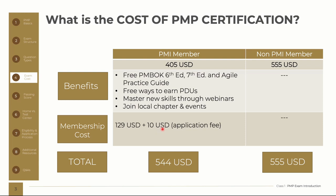The cost of PMI membership for one year is 129 USD, and there is a 10-dollar application fee associated with it. If you combine the discounted PMP exam cost with the one-year membership cost, the total cost of your PMP exam initiative from a PMI membership standpoint is 544 USD. This is still better than the 555 USD cost for non-members, so it is always a good idea to become a PMI member.